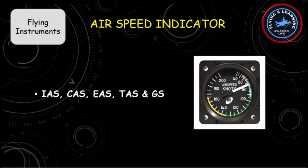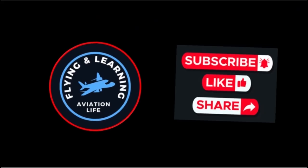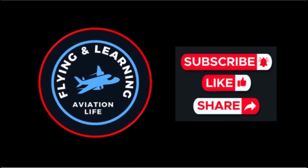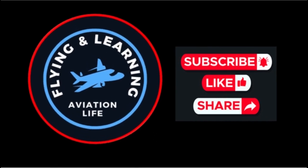There are different other types of speeds like calibrated airspeed, equivalent airspeed, true airspeed, and ground speed. The differences between all of them will be discussed in our next video, along with different errors of the ASI. If you like our efforts, don't forget to subscribe, share, and press the bell icon for notification updates.